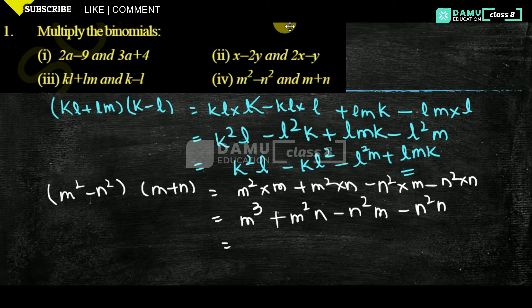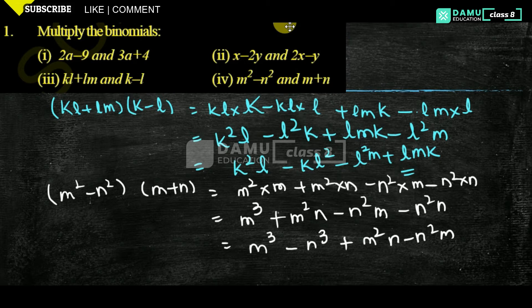So you can write in the format of: m cubed, then n squared into n will become n cubed, so m³ minus n³ plus m²n minus n²m, like this you can write. Thanks for watching, please subscribe.